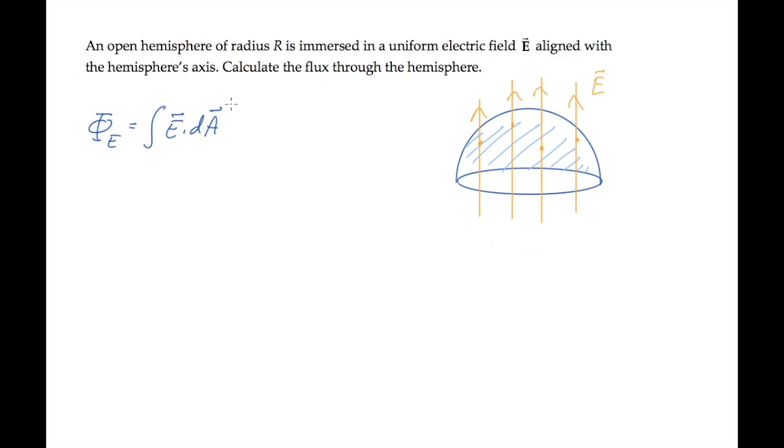If we realize that the electric flux through the closed surface composed of the open hemisphere and the bottom surface equals zero, then we can say that the flux through the top hemisphere plus the flux through this circular bottom surface equals zero.